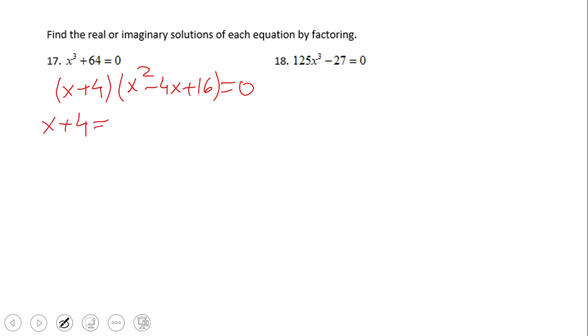Do you notice I did the first factor x plus 4 equals 0, right? Zero product property. That gives us the first solution, x equals negative 4. How do we find the other solutions? By making the second factor, that quadratic, equal to 0. Like I said, this you cannot factor out.